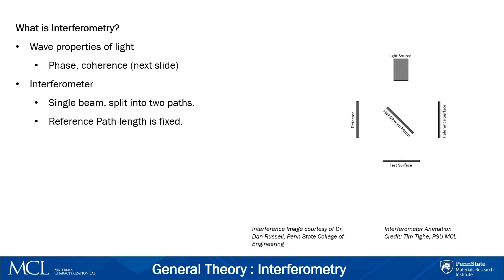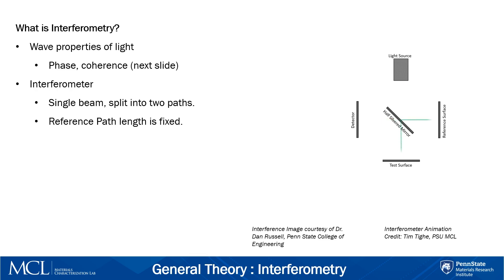How are these measurements being made? We take advantage of some of the wave properties of light, namely phase and coherence, to obtain our data. Carefully placed optics referred to as an interferometer allow us to use these wave properties, as shown in the animation on the right.